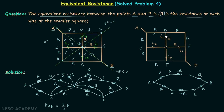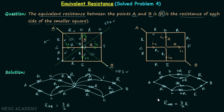Between D and F we have a single resistor of value 2R, and between C and E again a single resistor of value 2R. When you simplify this network you get the equivalent resistance equal to 3/2 R, and compared to the previous method, solving this network is simpler. I hope you now understand how to use the rules of symmetry to simplify a network and calculate equivalent resistance.